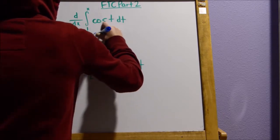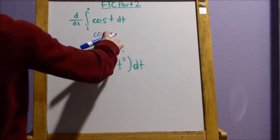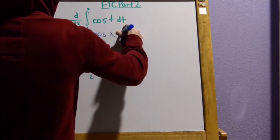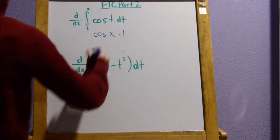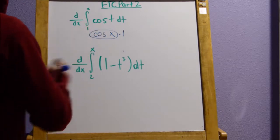So, we're going to get cosine of x. Now, the derivative of x is one, so you could write it if you want, but it's really just going to be cosine of x. That's how easy that is.